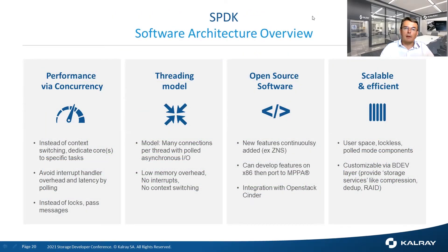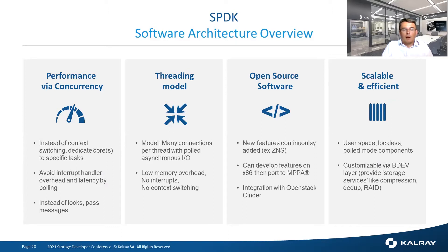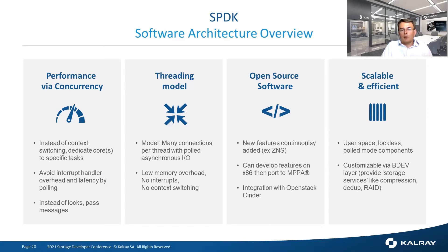Why did we select SPDK as our software framework? SPDK performance is really based on concurrency, which totally fits the minicore approach as well as the NVMe paradigm based on a high number of IOQs. Instead of having a context switch, we dedicate cores to execute specific tasks. This way we prevent interrupts, and everything is performed by polling. There is no lock, and every communication between threads uses message passing. A thread running on a dedicated core will handle many connections in a synchronous way — no interrupts, no context switch, and low memory overhead.